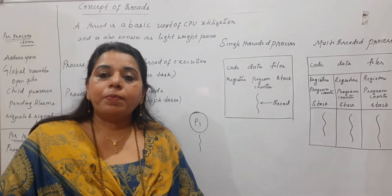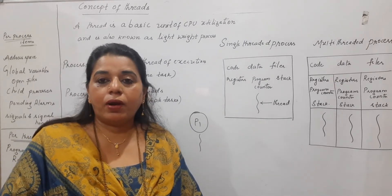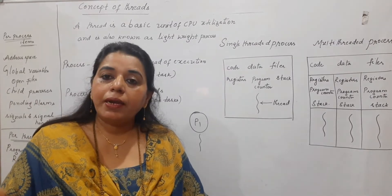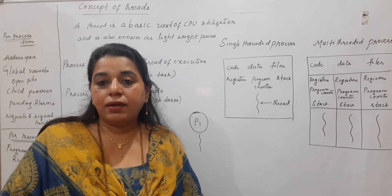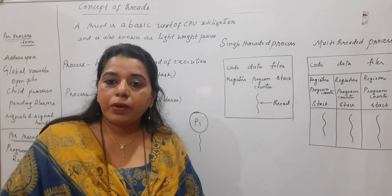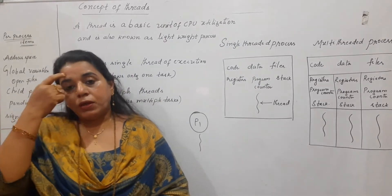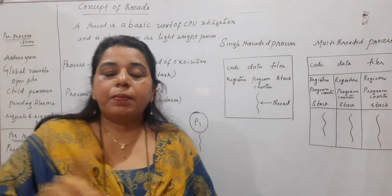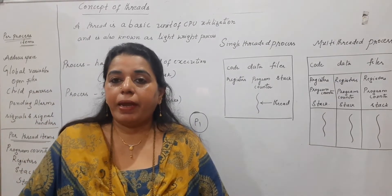Now if that process creates a child process, the child process gets a separate address space and also makes use of its own files, code, data, registers, program variables, global variables, program counter, all those things. That means the child process is not sharing the address space of the parent process.